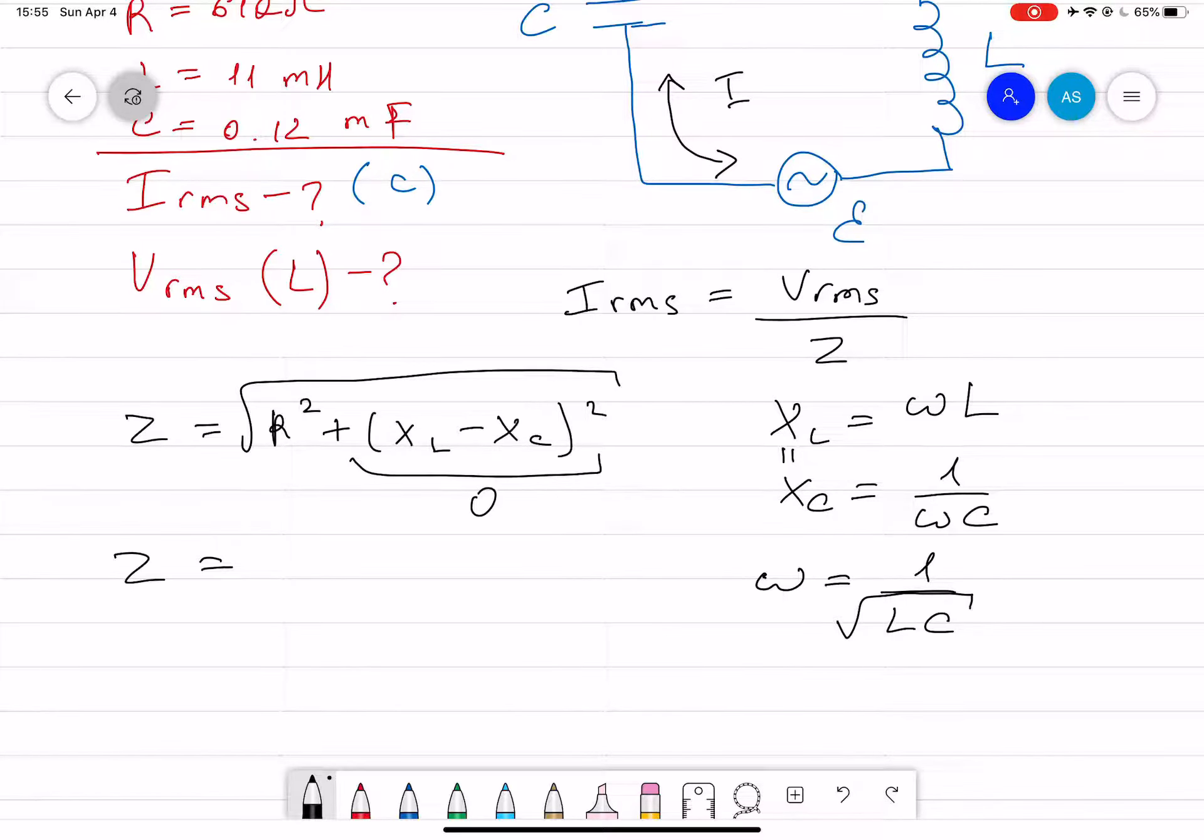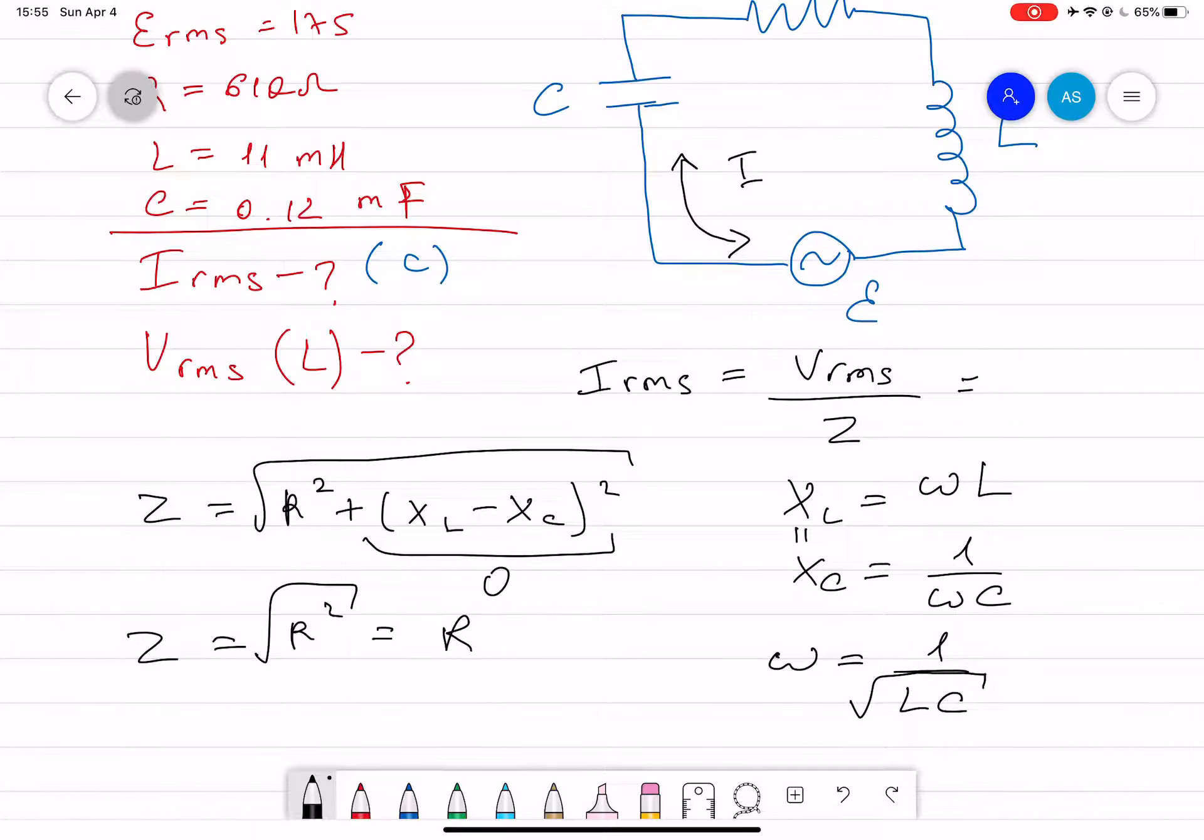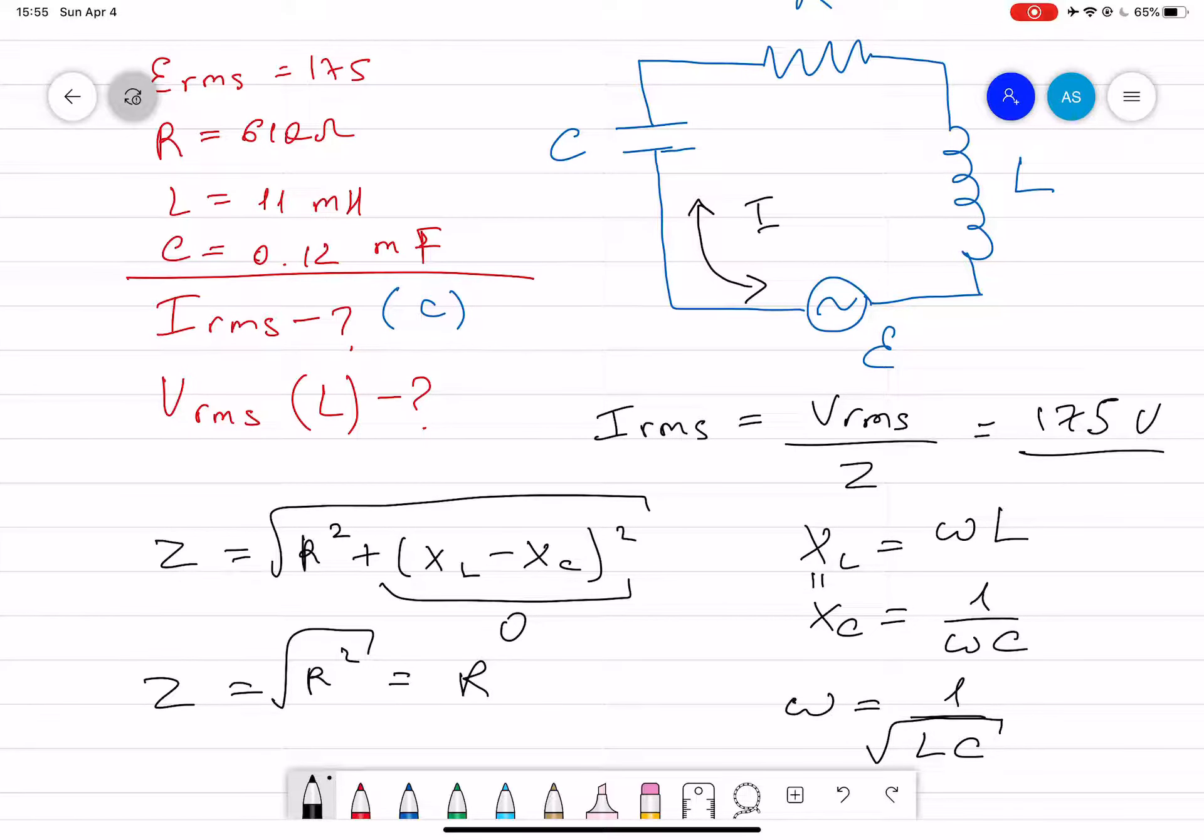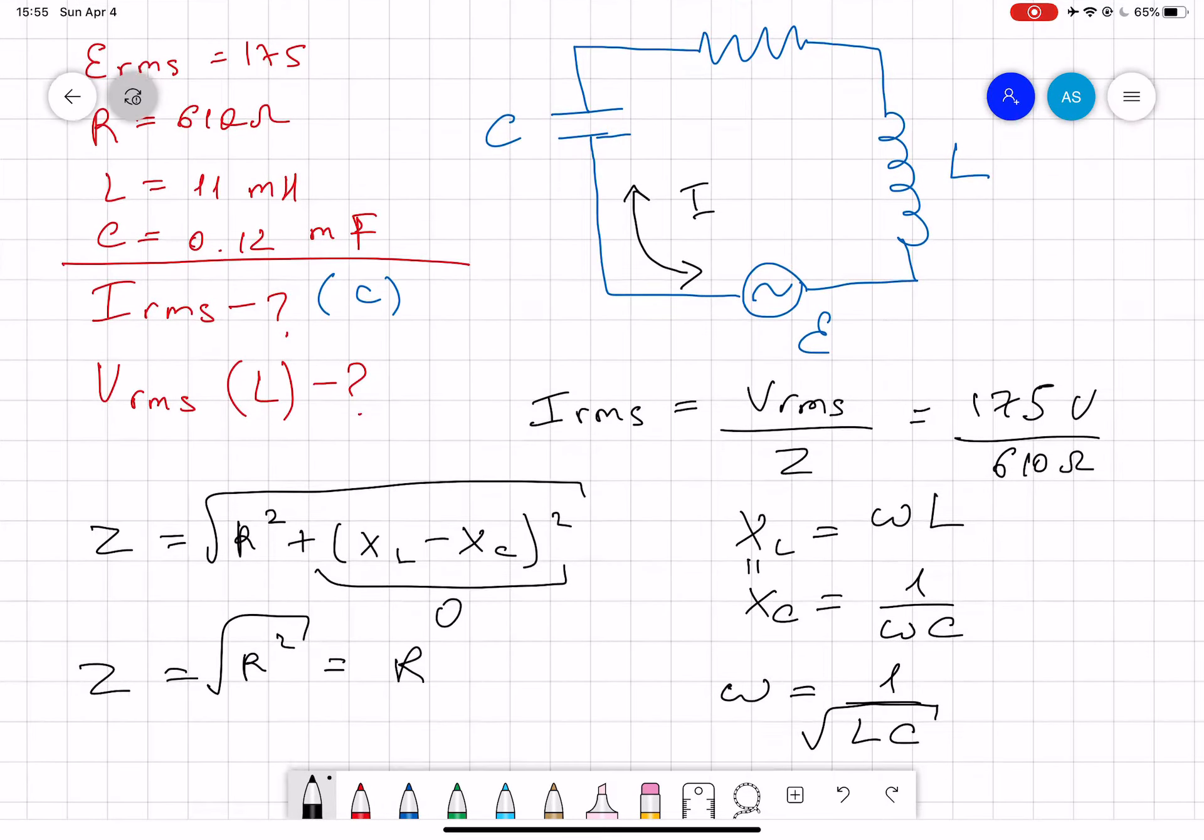After that, you put the values here. V_rms is given as 175 volts, divided by R which is 610 ohms. Then you find I_rms, and as I said, it will be the same across C, R, and L.